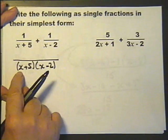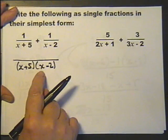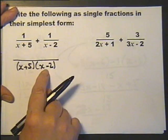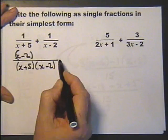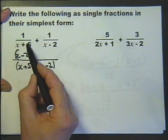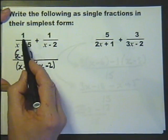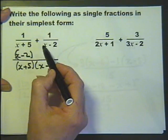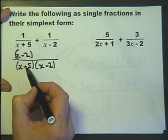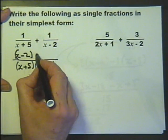So looking at this fraction, we need to multiply the top by x minus 2. The bottom has been multiplied by x minus 2, so the top must be multiplied by x minus 2. Let's look at this fraction. The bottom has been multiplied by x plus 5, so I must multiply the top by x plus 5.